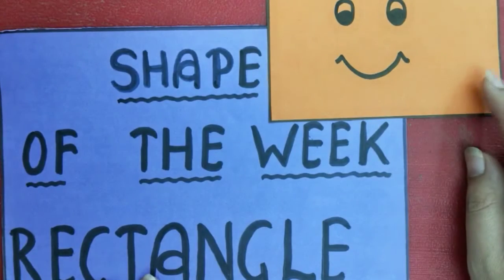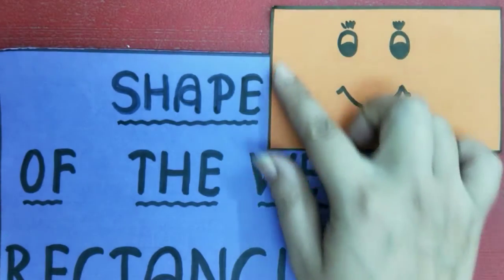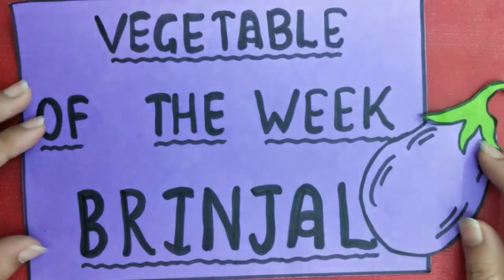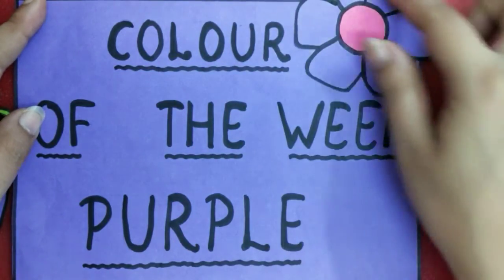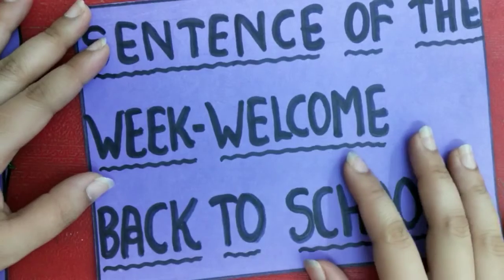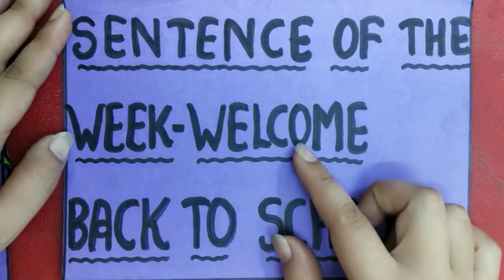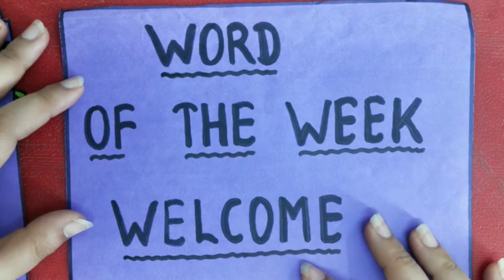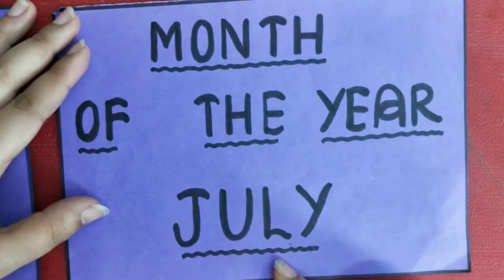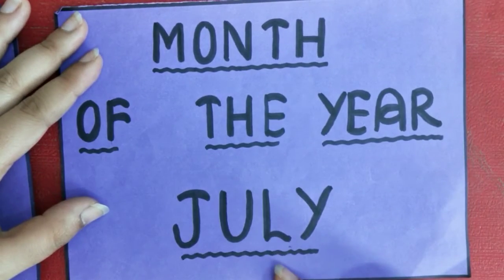Let's revise. Shape of the week is rectangle. Now vegetable of the week is brinjal. Now color of the week is purple. Now sentence of the week: welcome back to school. Now word of the week is welcome. And month of the year is July. Very good.